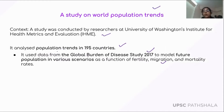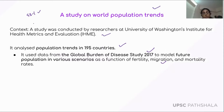This particular news will be useful for your GS Paper 1 under the headings: population and associated issues, poverty and developmental issues, and urbanization — their problems and their remedies.